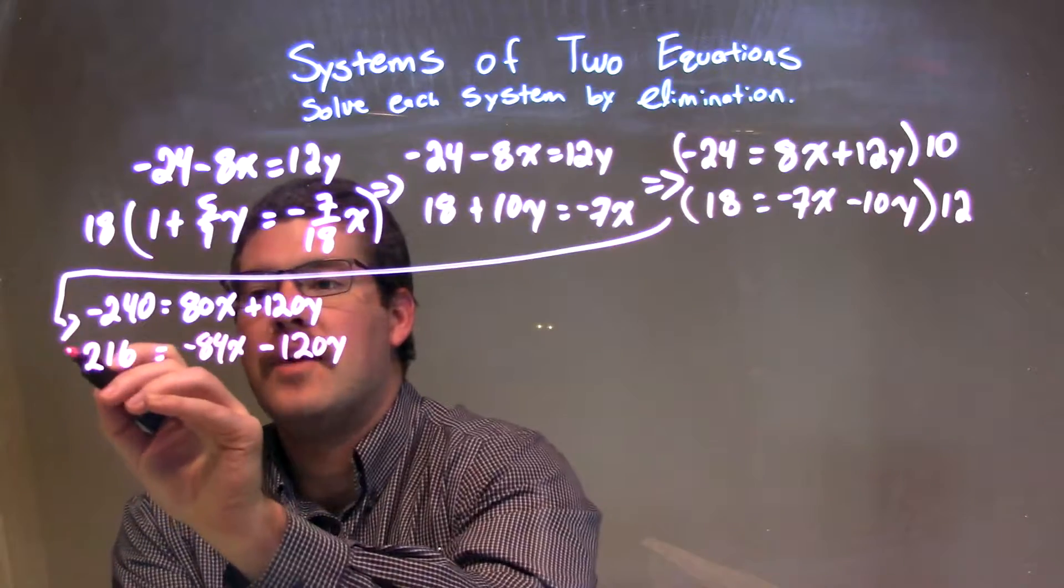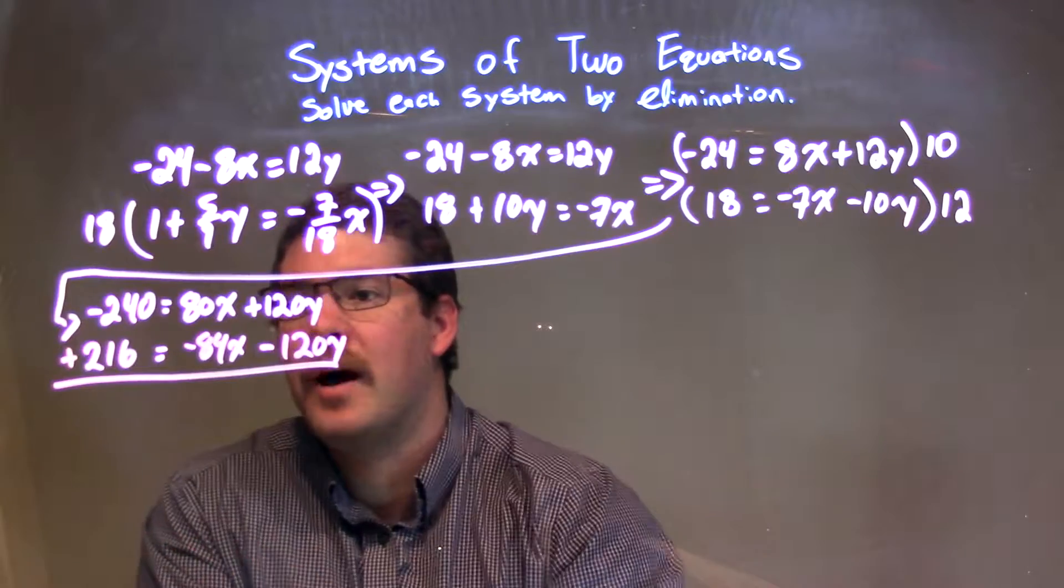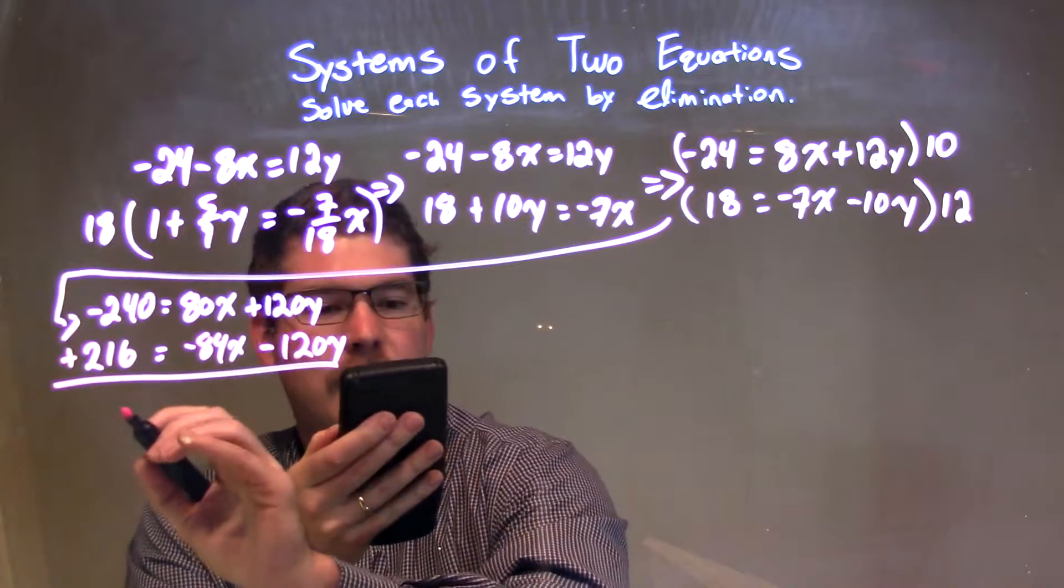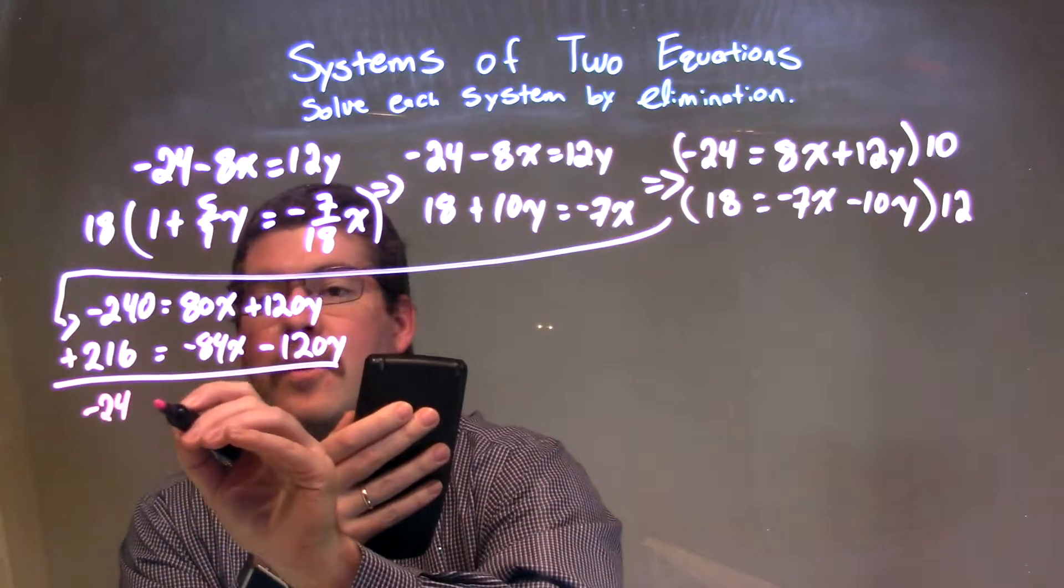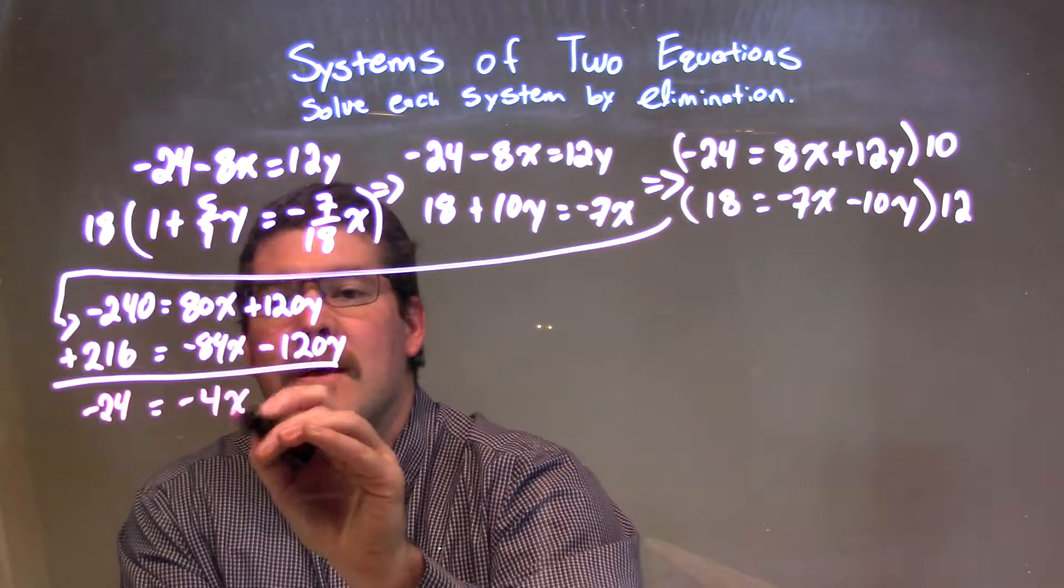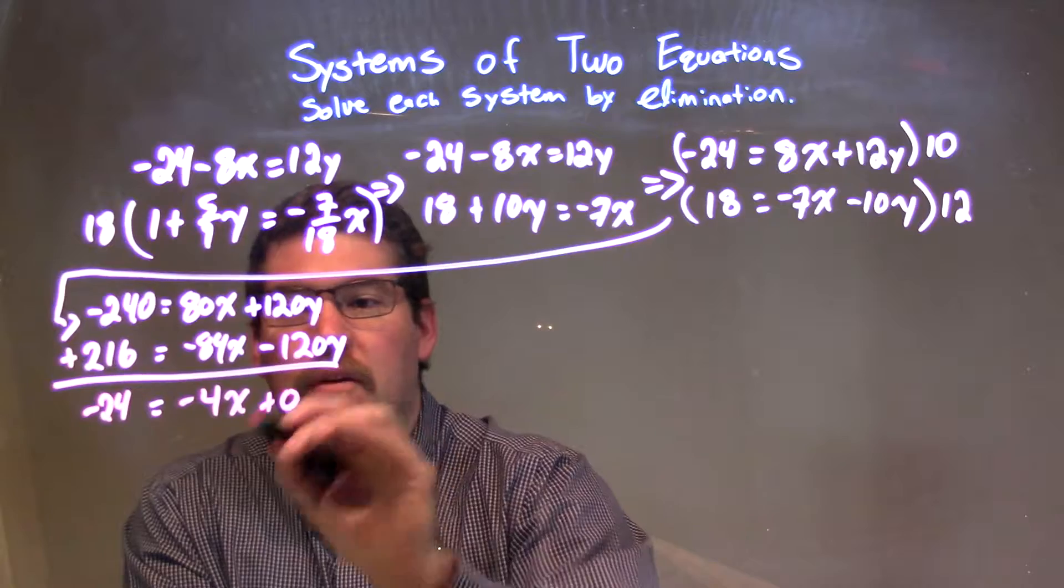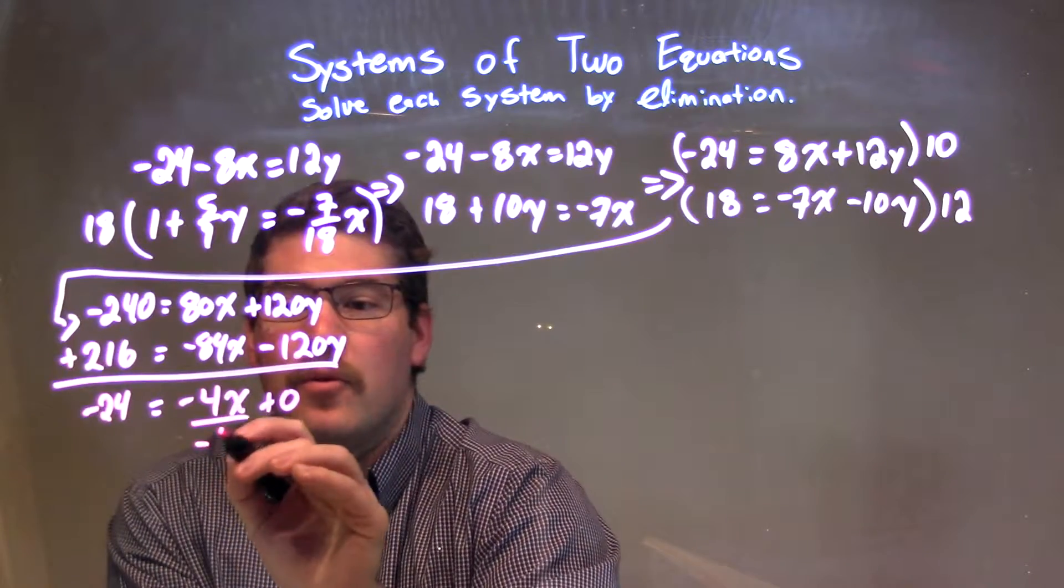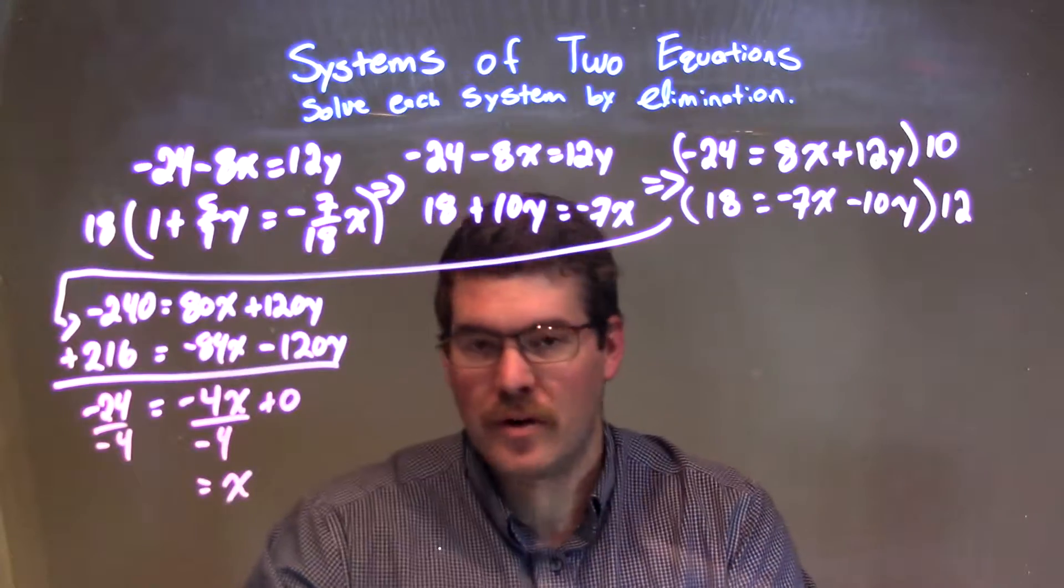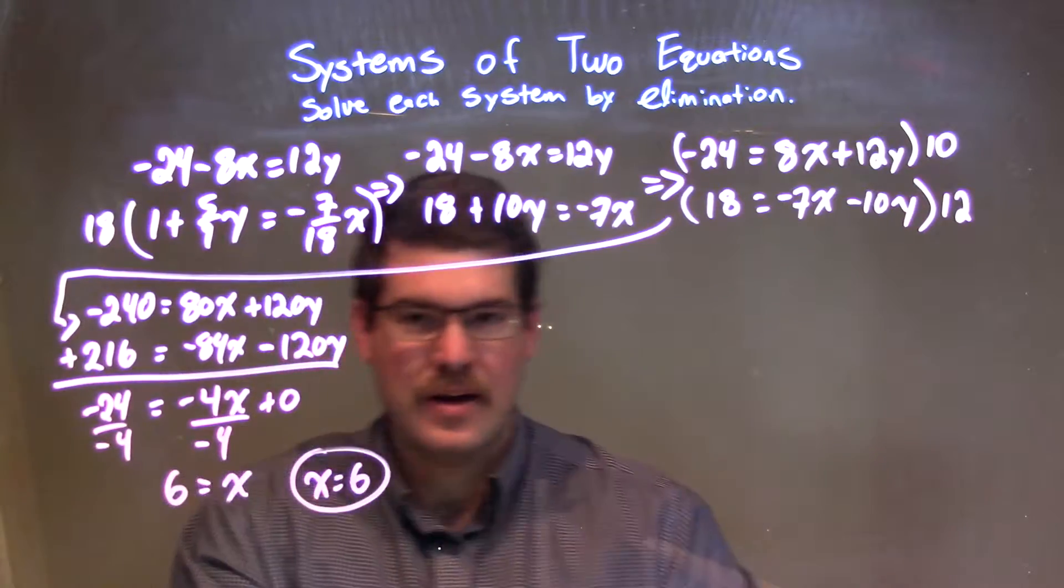And what that allows me to do now is I can eliminate these two, top to bottom. Negative 240 plus 216 is a negative 24. 80x minus 84x is a minus 4x, and, like it should have happened, 120 and a negative 120 is 0. After that, I have to divide by negative 4 to both sides, and that leaves me with the x by itself, and negative 24 divided by negative 4 is a positive 6. So, we have x equals 6.